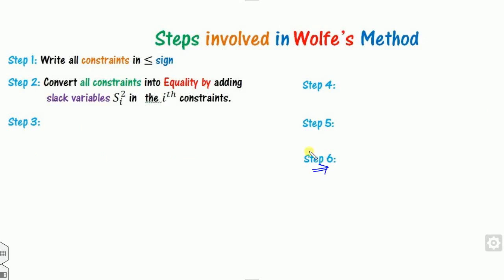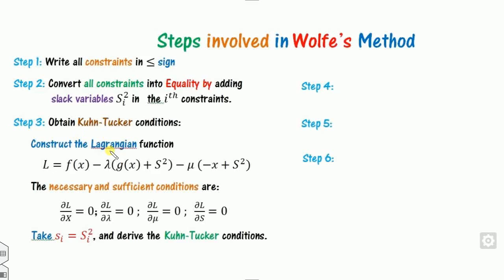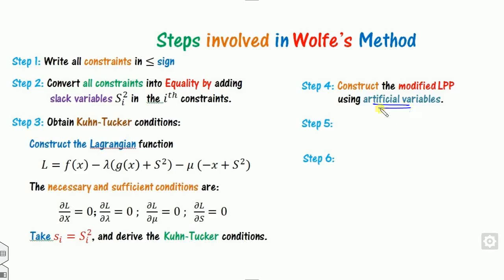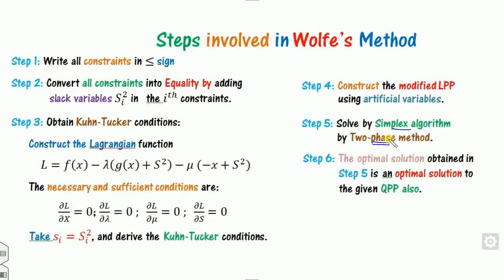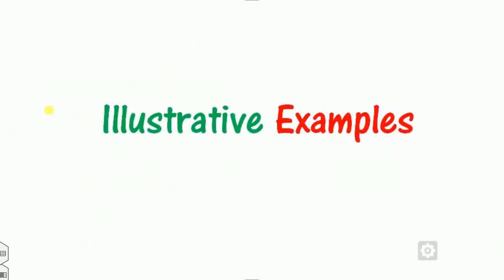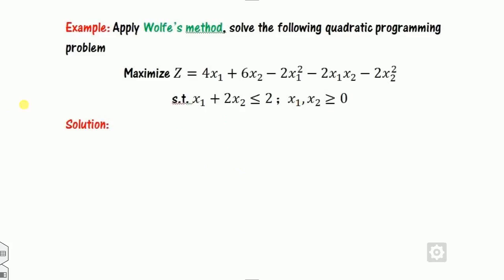There are six steps involved in the Wolf method. The first step is that all constraints must be in less-than-or-equal-to form. After that, write the equality form, then write the KKT conditions. Since the Lagrange function L is quadratic, taking derivatives gives a linear function. Once it is linear, it becomes an LPP, which you solve using the simplex method with artificial variables — specifically the two-phase simplex method — to find the optimal solution.